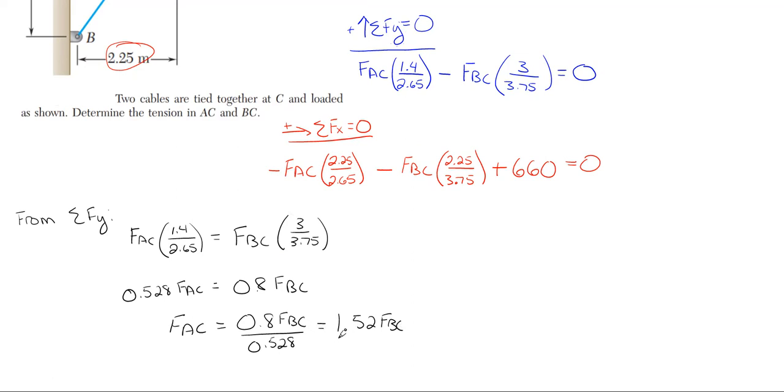This tells me how much of FBC will equal FAC. What I can do since I've used the Y equation, I can take this value and plug it into my other equation, my X equation in terms of FAC because this is what FAC equals. And then once I do that, this term, the first term of the X equation will be in terms of FBC. The second one's in FBC. And that is the only unknown inside the X equation now is FBC.